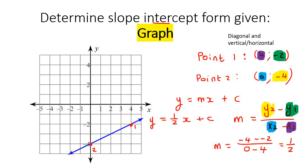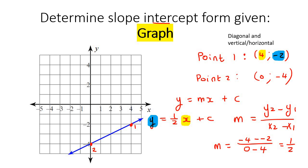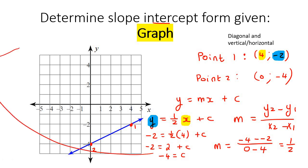To find c, you choose either point 1 or point 2. I'm going to choose point 1, so the x value goes in and the y value goes in. We get: negative 2 equals one half multiplied by 4 plus c, so negative 2 equals 2 plus c. Getting c by itself gives us negative 4. So our final answer is y equals one half x plus negative 4.